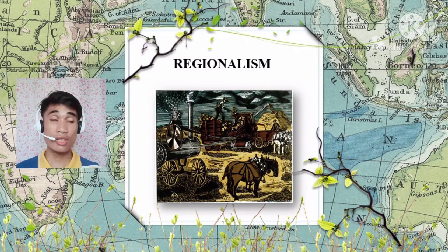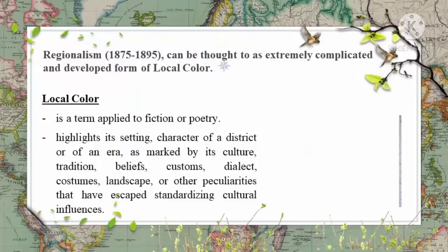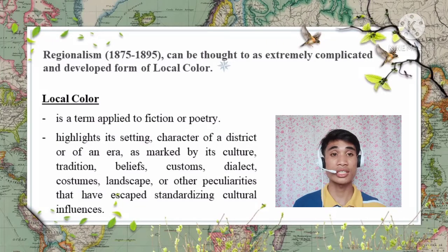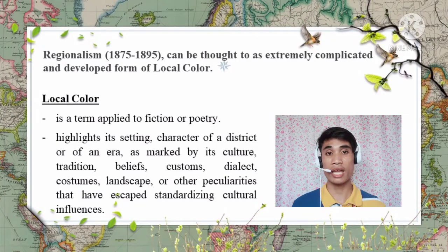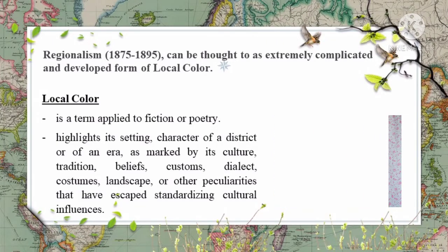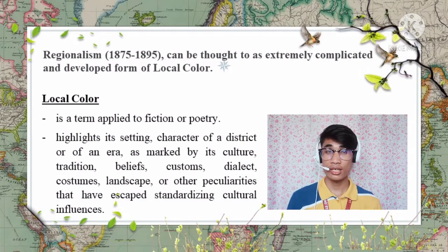Let's talk first about regionalism. Regionalism can be thought of as an extremely complicated and developed form of local color. You may wonder — what does local color mean?